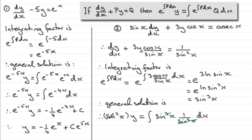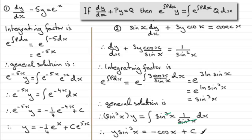Swapping the two parts around, we have y·sin cubed x equals minus cos x plus c. That's our general solution. You could rearrange this, but I'll leave it in that format. I hope this gives you an idea of what you can do when you get questions like these, and that it sets you up for other similar examples.